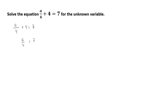we will now subtract 4 from 7 on the right-hand side of our equation. Remember that we always perform the opposite operation on the other side. So we are going to put back our A over 4, and 7 minus 4 is going to equal 3.